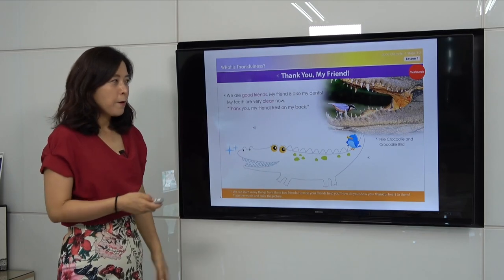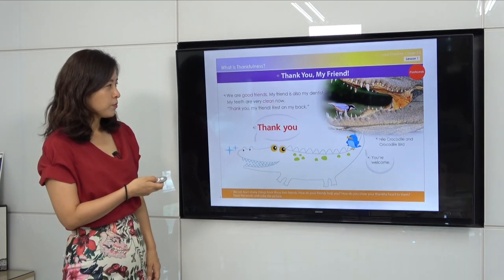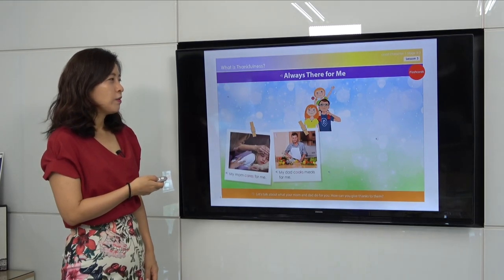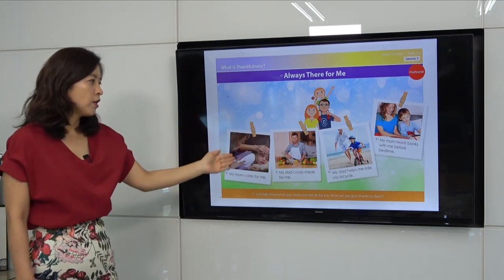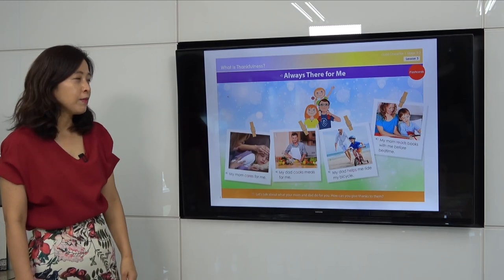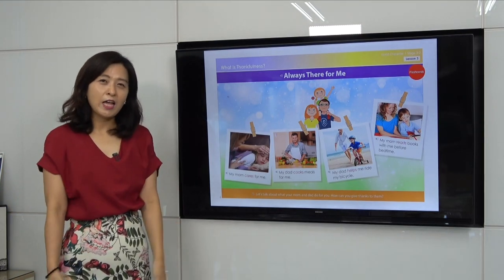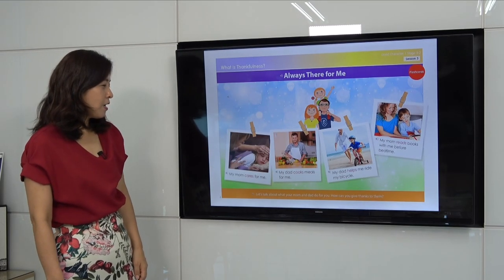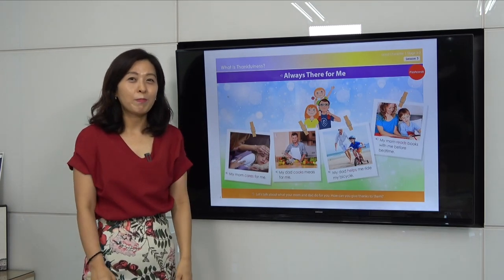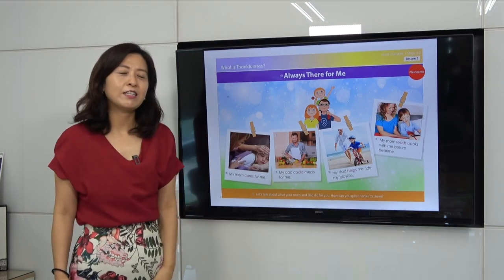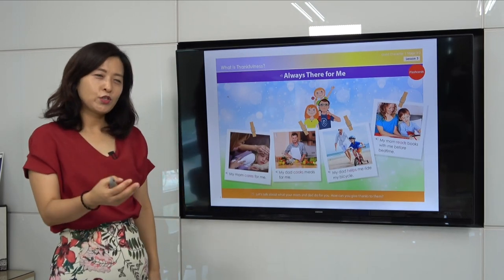This is the crocodile and crocodile bird — a really famous story. You can use our flash cards and do storytelling with your kids. There is also 'always there for me.' When we show four different pictures, it's very related to family as the very first community. With these pictures, ask the kids to share their ideas. The first one: 'My mom cares for me' — do you have any experience when your mom cared about you?